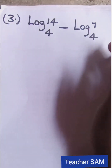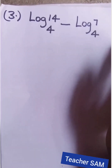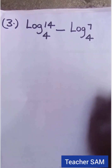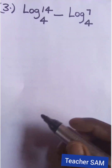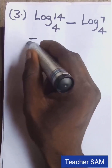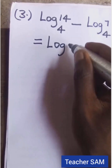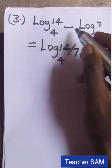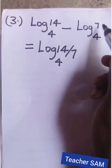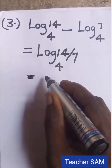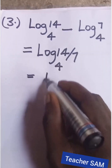Question three: log 14 to base 4 minus log 7 to base 4. We can simply apply the laws of logarithm. Whenever there is a minus, we divide the arguments, so this becomes log of 14 divided by 7, to base 4. And 14 divided by 7 gives us log 2 to base 4.